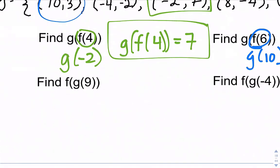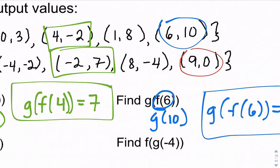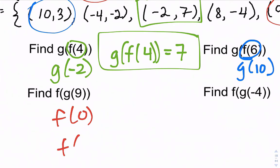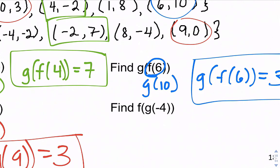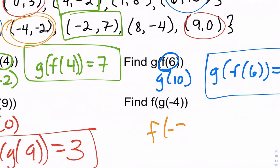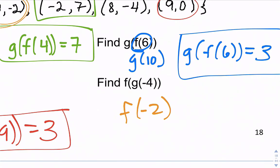Find f of g of 9: start with g of 9, which is 0. Now find f of 0, which is 3. So f of g of 9 equals 3. Find f of g of negative 4: start with g — when the input is negative 4, the output is negative 2. Now find f of negative 2 — when the input is negative 2, the output is 5. So f of g of negative 4 equals 5.